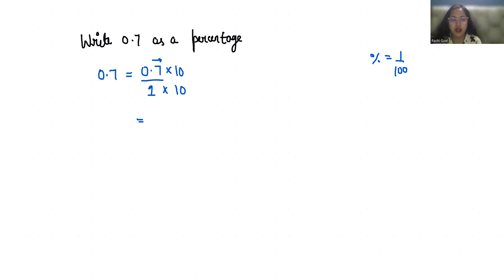So it becomes 7 by 10. But to convert to percentage we need 100 in the denominator. So I am going to multiply with 10 in numerator and denominator again.